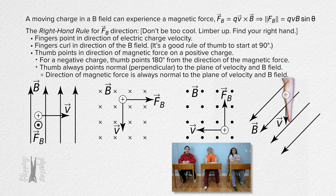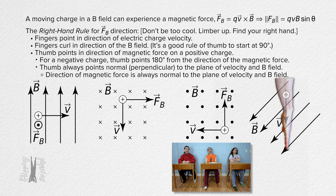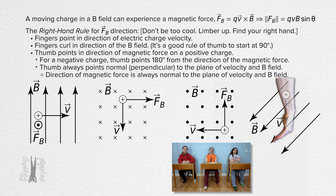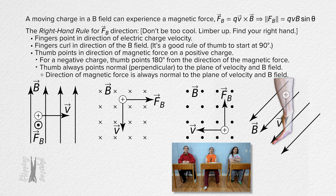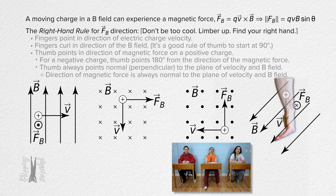Point our fingers down in the direction of the velocity, curl our fingers in the direction of the magnetic field — this time we actually curl our fingers slightly less than 90 degrees — and our thumb points into the screen, so the direction of the magnetic force is into the screen.